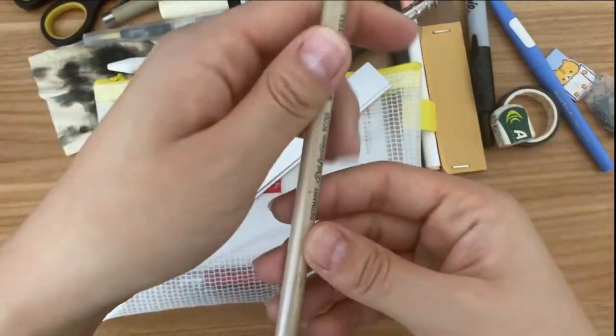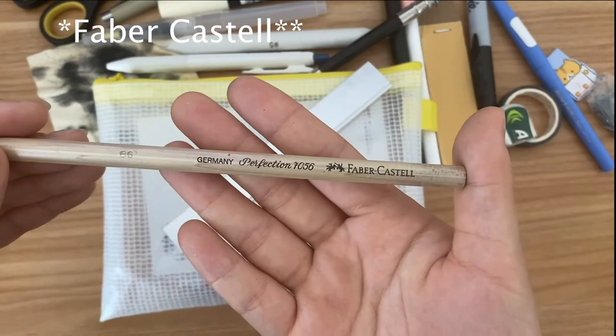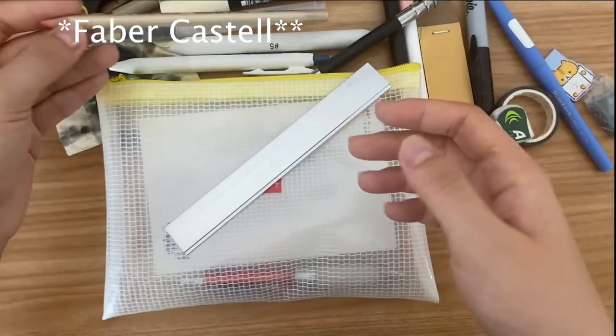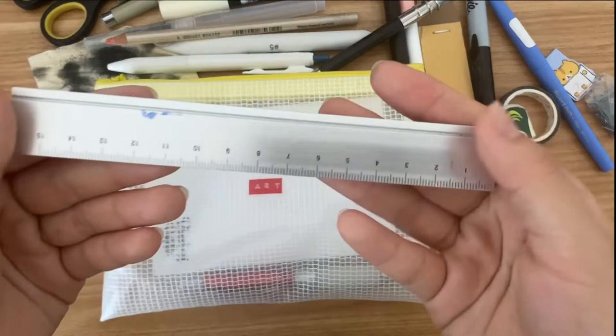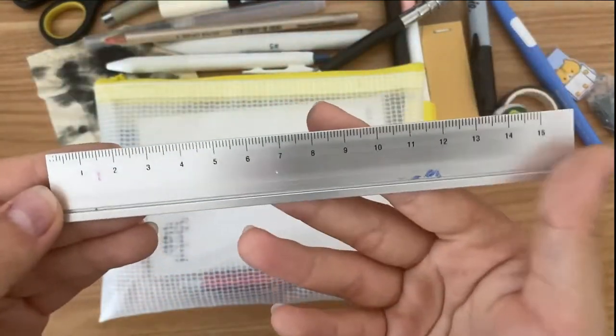Then I have the Paper Mate pencil eraser and my Muji steel ruler.